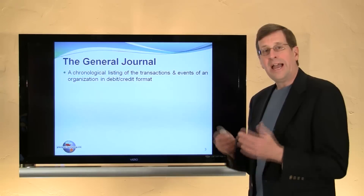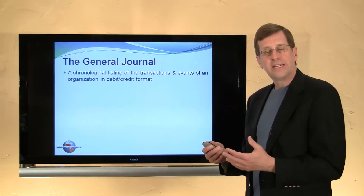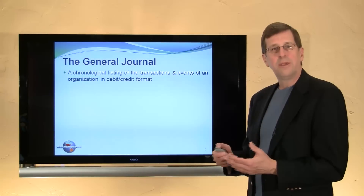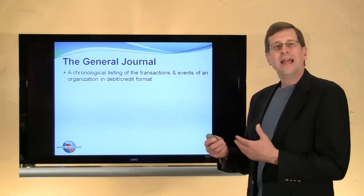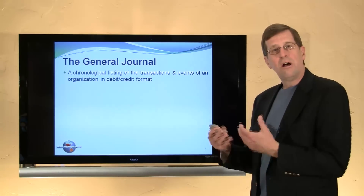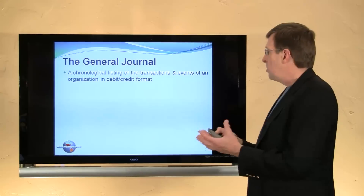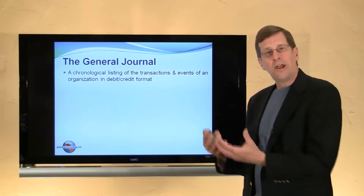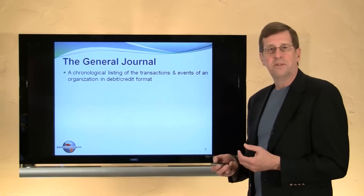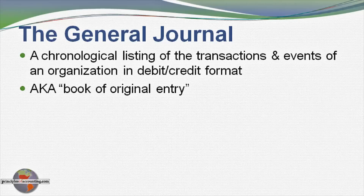You probably are already familiar with the idea of a journal. A journal represents a log of activity. If you kept a journal on a trip you would think about recording narratives of events that occurred, things you saw, places you went, things you did. A general journal for a business is the chronological listing of transactions for the business. It's also known as a book of original entry. As transactions and events occur, they are originally entered into the accounting system through a general journal process.